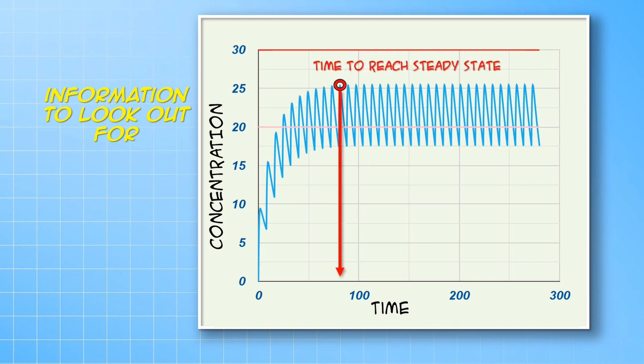This is the time when concentrations despite fluctuations show some dose-to-dose stability. Next, look at what the maximum concentrations are and then what the minimum concentrations are at steady state.